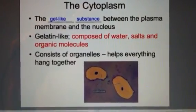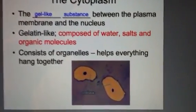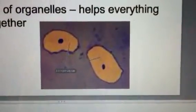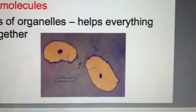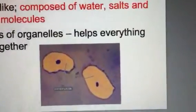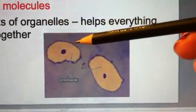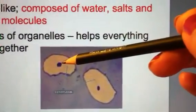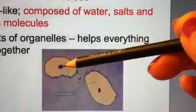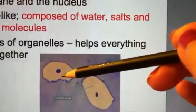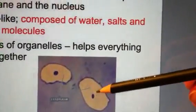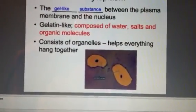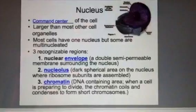The cytoplasm helps all the organelles and structures in the cell hang together. Zooming in on the image, you'll notice these are animal cells. You can see the plasma membrane surrounding the cell, and the nucleus staying dark is the command center of the cell. All of the area surrounding the nucleus is the cytoplasm.